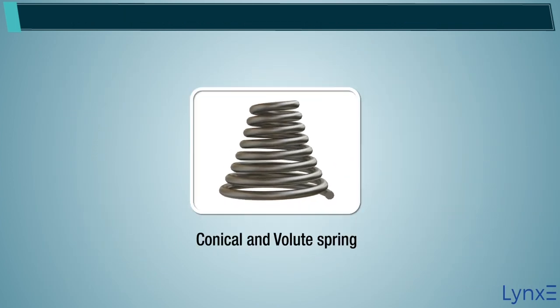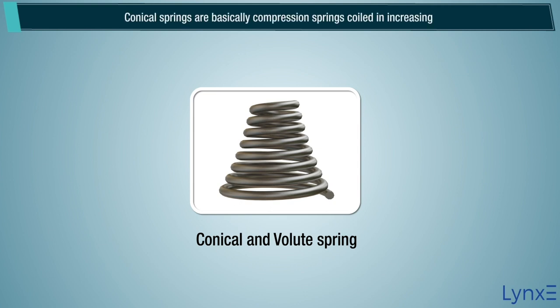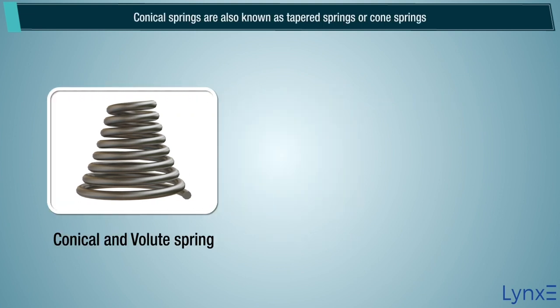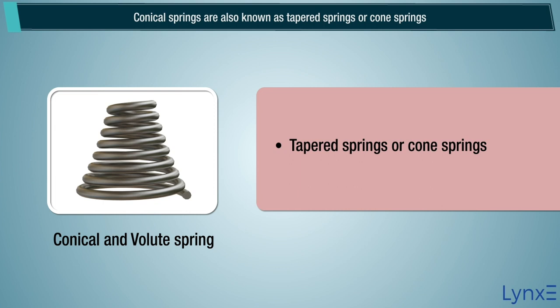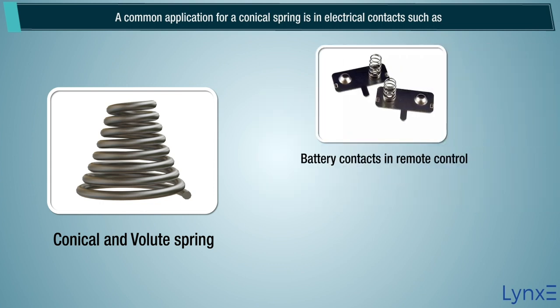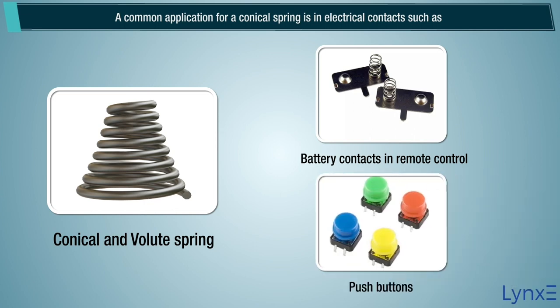Conical and volute springs are basically compression springs coiled in increasing or decreasing outer diameters, thus making the shape a cone or tapered one. These springs tend to reduce solid height and provide stability. Conical springs are also known as tapered springs or cone springs. A common application for a conical spring is in electrical contacts, such as battery contacts in remote controls and push buttons.